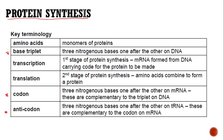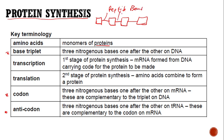We are going to touch the surface of what really happens, but we must know these terms properly. Starting with amino acids — amino acids are the building blocks for proteins. An amino acid will bond to another amino acid and then another one through what we call a peptide bond. A long chain of amino acids is known as a polypeptide.